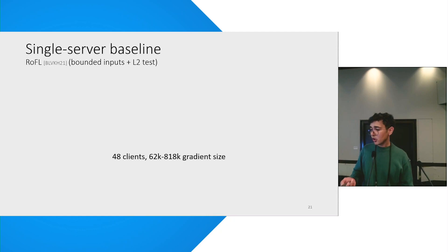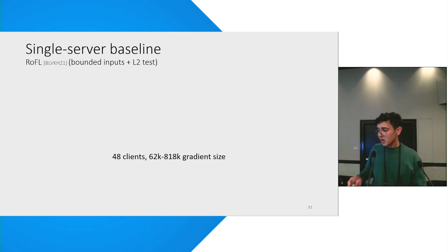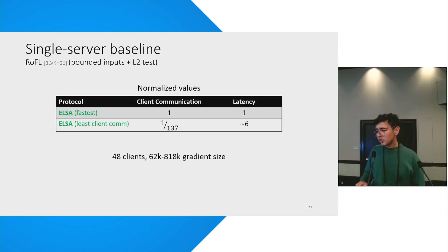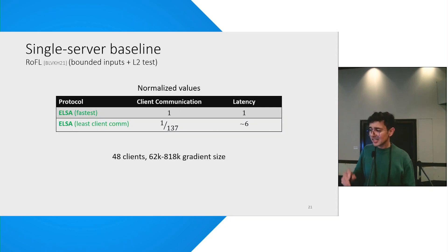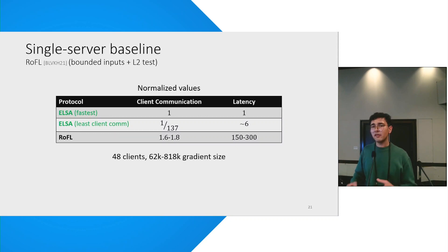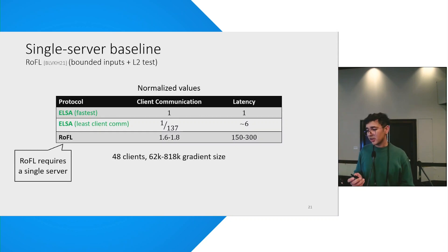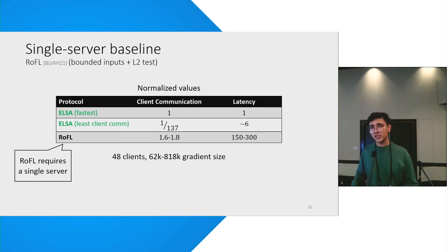The second comparison is with a single-server baseline — we chose the Roeful protocol, which was presented yesterday at the symposium. There we have a similar story, although the latency increase in our second variant is slightly higher but still decent. Compared to Roeful, we see huge gains. Although I should mention that Roeful requires a single server whereas we require two servers, so they don't rely on the non-collusion assumption that we rely on — so keep that in mind when you parse these results.